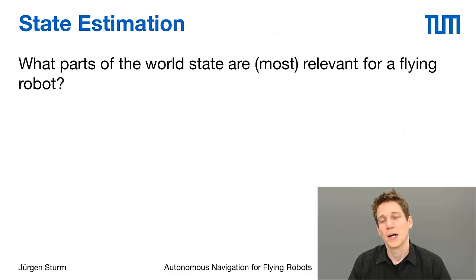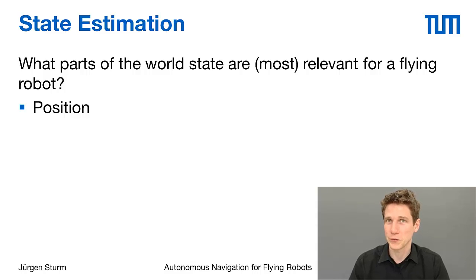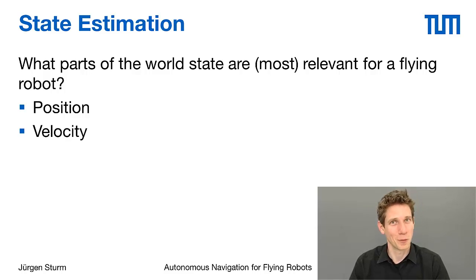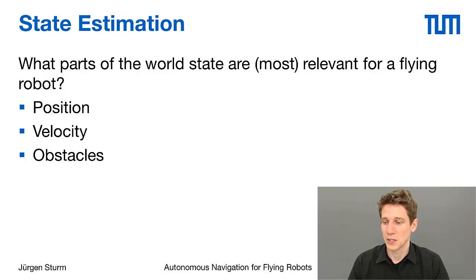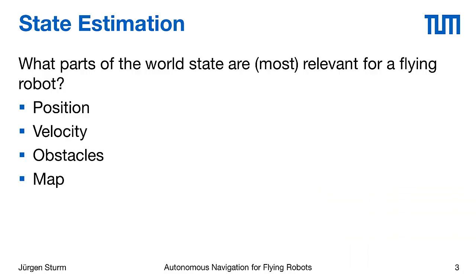The question is: what are the relevant parts of the world state that we need to model? That depends largely on the task at hand. For a quadrotor, it is important to know its position — typically a 2D or 3D position, or even a six-degree-of-freedom pose in 3D space. We are also interested in velocity, which we need for the derivative part of the PID controller. If flying through the world, we also want to know where obstacles are, and if we need path planning, we need the map. All of these are part of the world state.